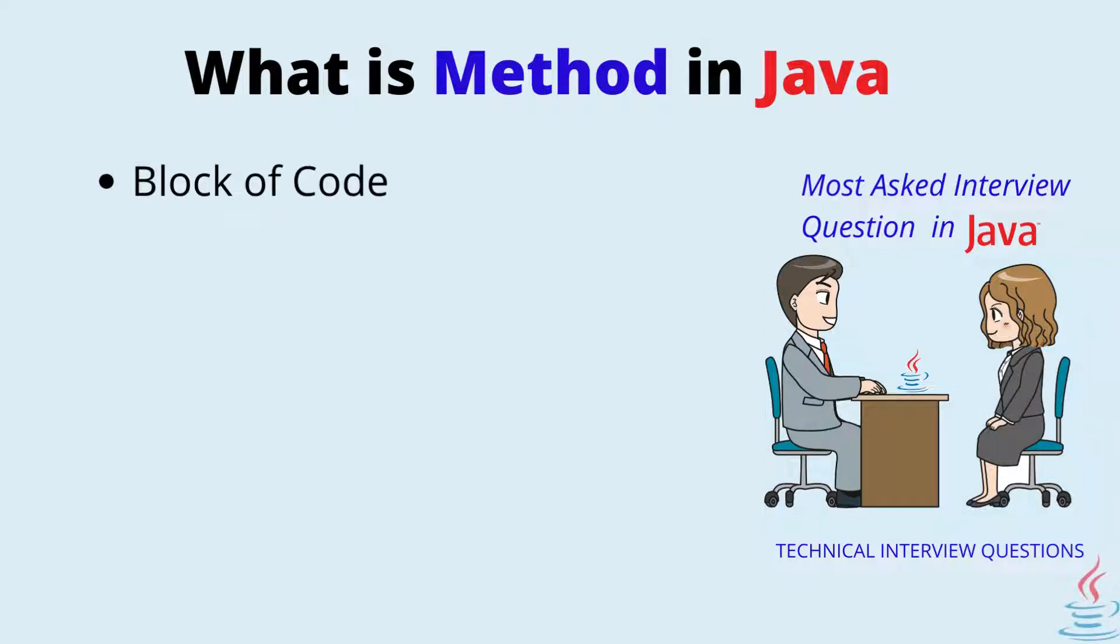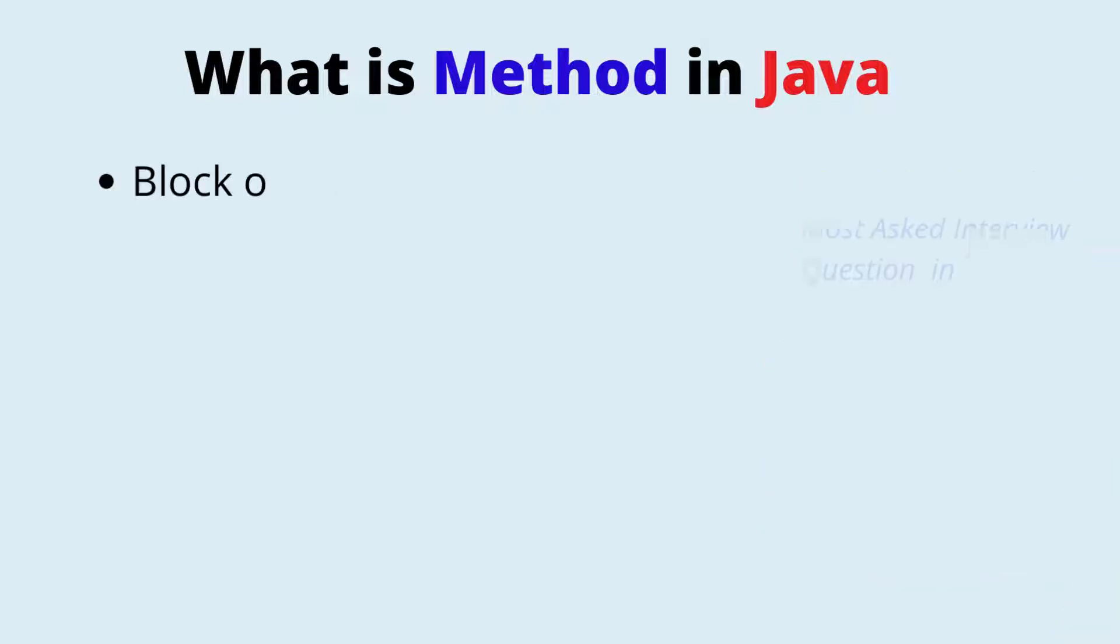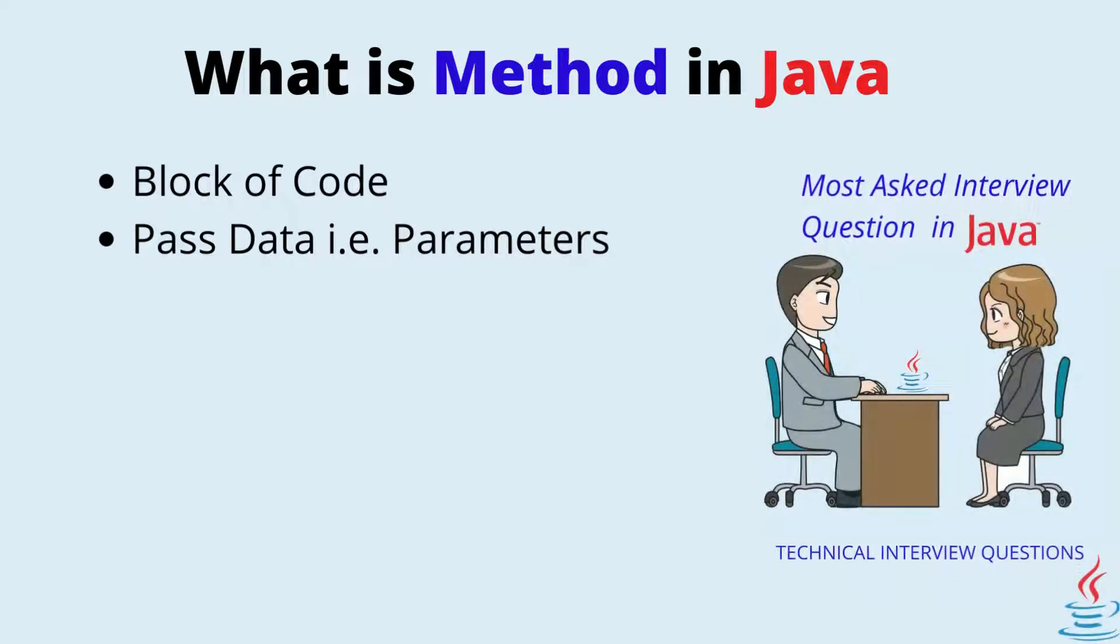What is method in Java? A method is a block of code which only runs when it is called. You can pass data, known as parameters, into a method.